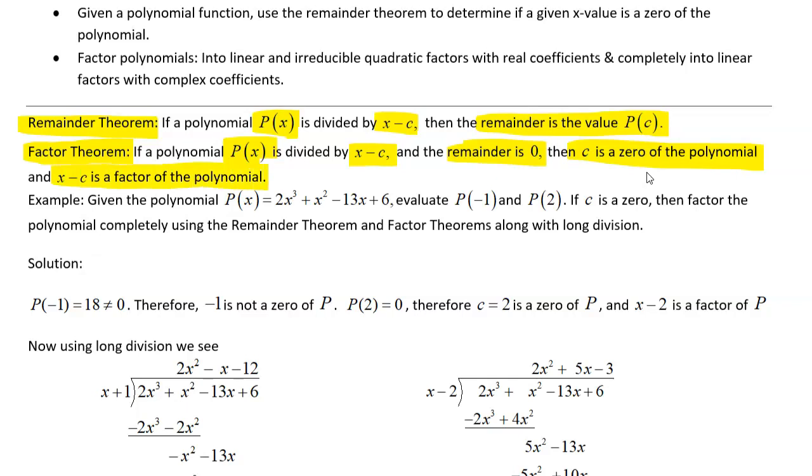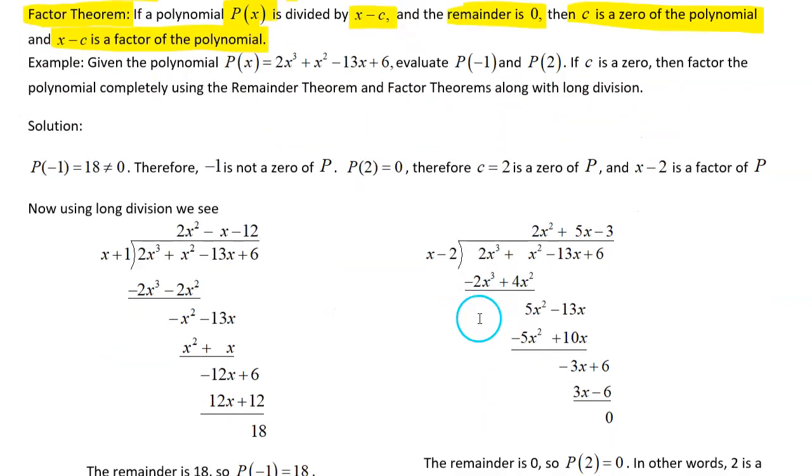So first we're just trying to learn all these skills, and then we'll start putting all our skills together, and you'll see that knowing this remainder theorem and the factor theorem will be very helpful for us to set up some things for our polynomials. So if you see the example here, they've got this polynomial p of x, and they want to evaluate it for negative 1 and then 2.